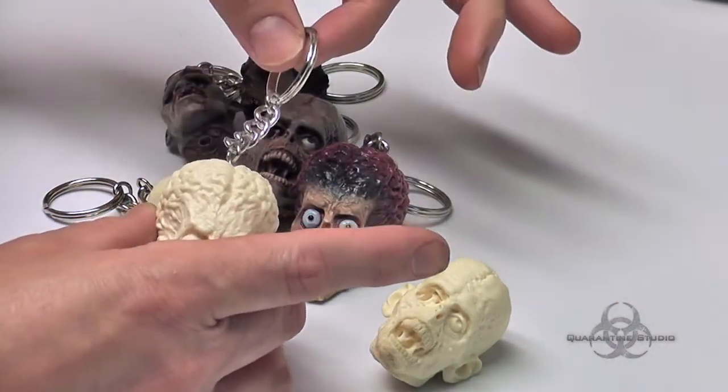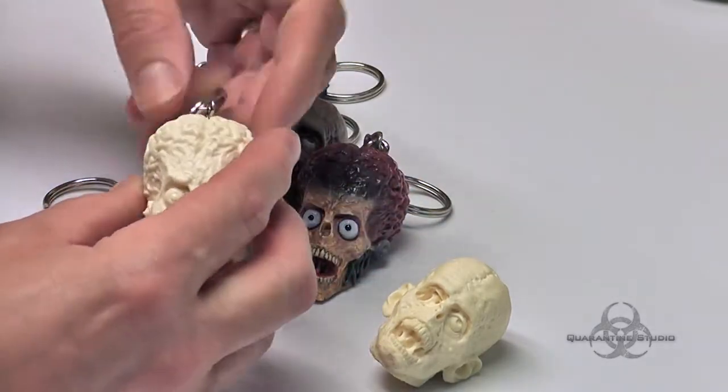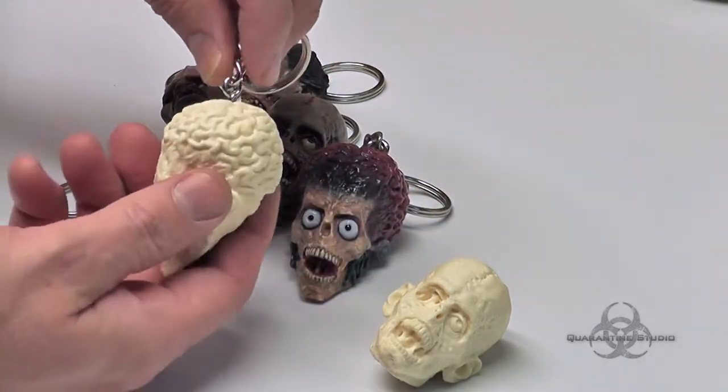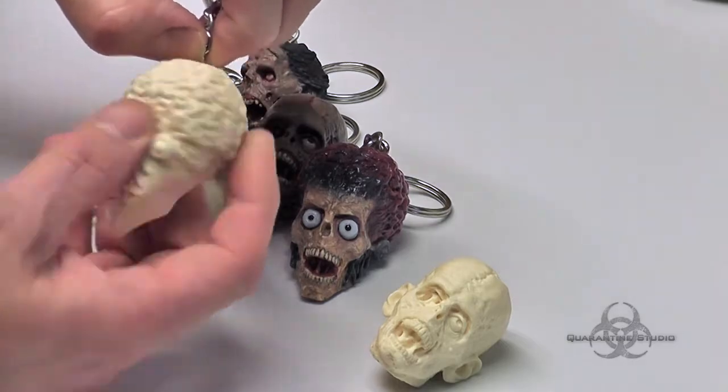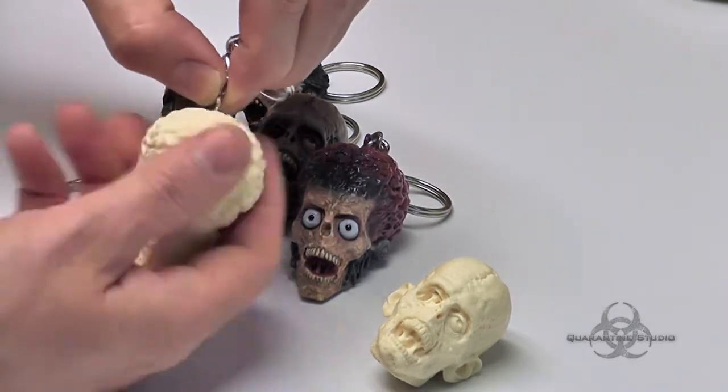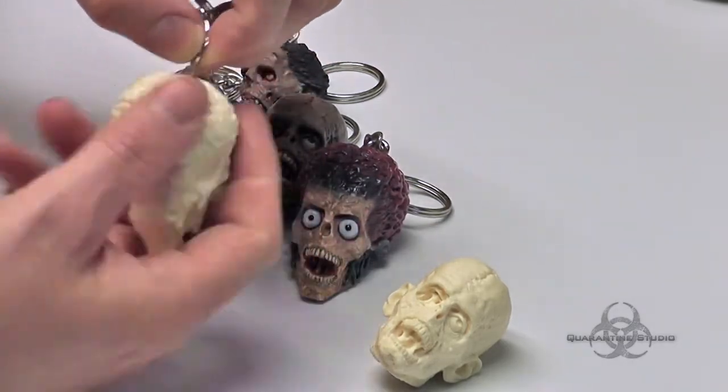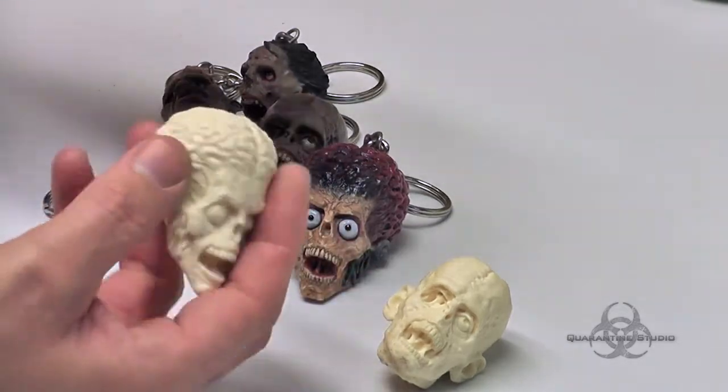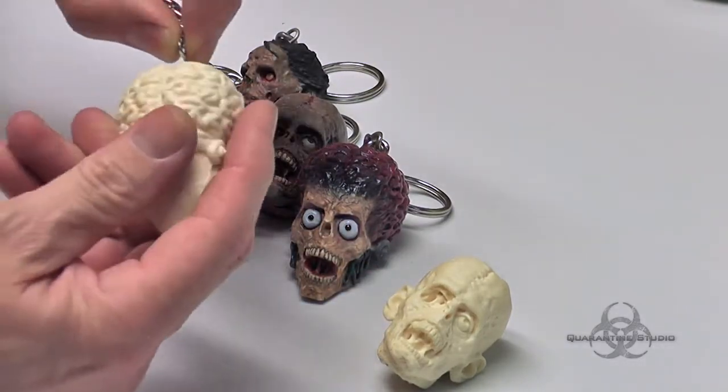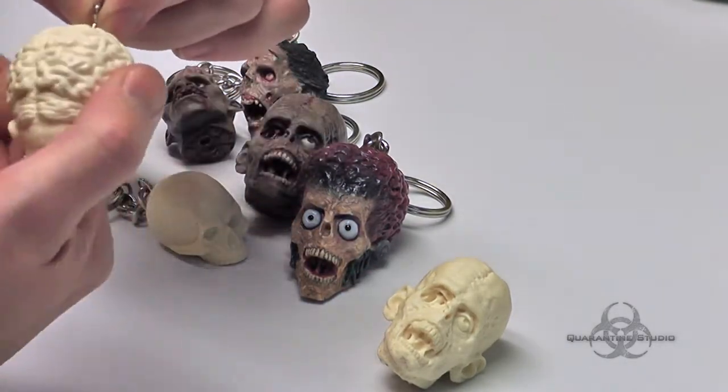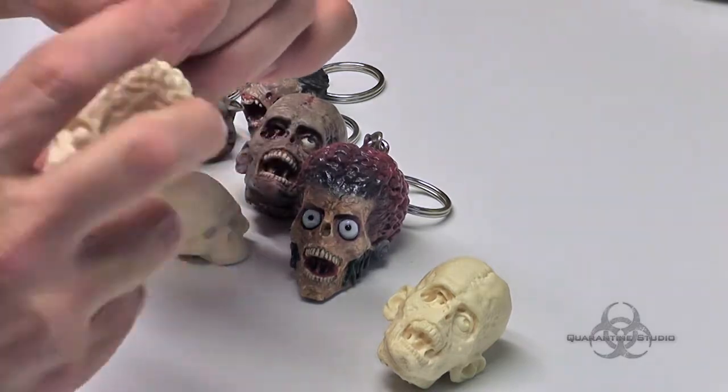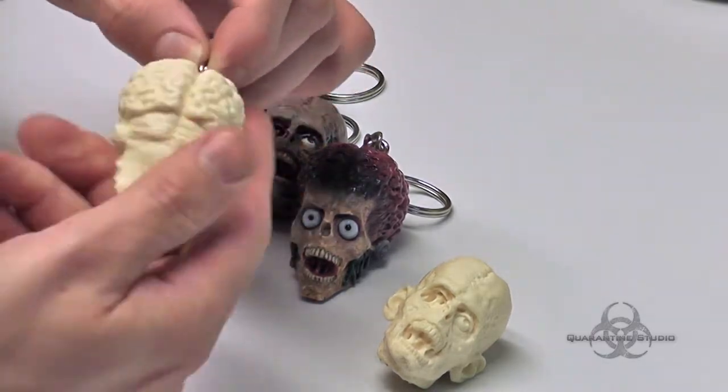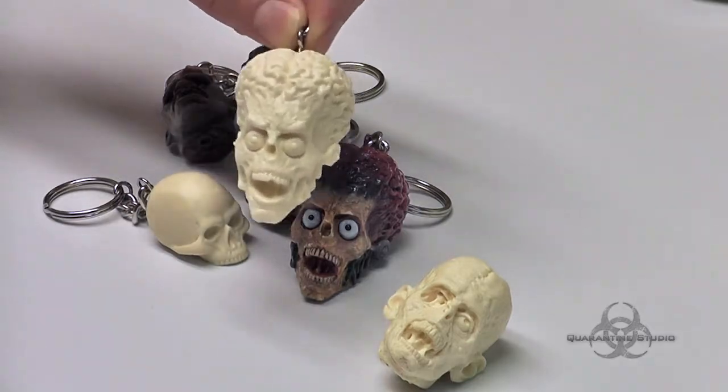They do come with the key ring already attached but it does come out. This is a little eyelet screw and so you can take it off for painting purposes if you'd like. Personally I like to leave it in there just to have something to hold on to while I'm painting it.